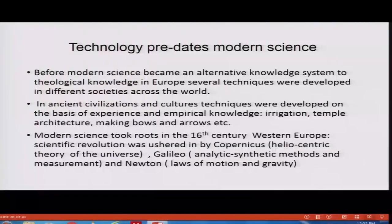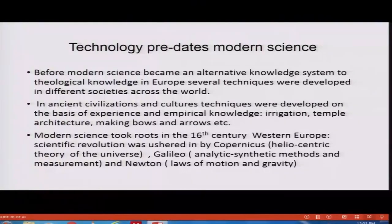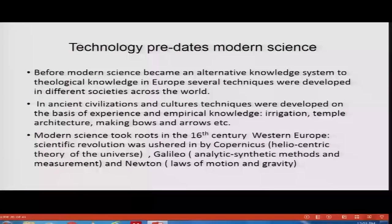Technology predates modern science. Before modern science became an alternative knowledge system to theological knowledge in Europe, several techniques were developed in different societies across the world. In ancient civilizations and cultures, techniques were developed on the basis of experience and empirical knowledge — irrigation techniques, temple architecture, making bows and arrows, making chariots. These were also examples of technologies that people developed. Modern science took roots in the 16th century Western Europe, and the scientific revolution was ushered in by Copernicus, Galileo and Newton.